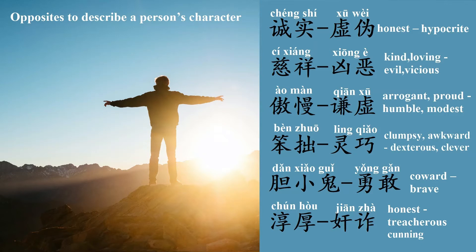The opposite of 笨浮 is 凌乳, dexterous, clever. 胆小鬼, coward. The opposite of 胆小鬼 is 勇敢, brave.